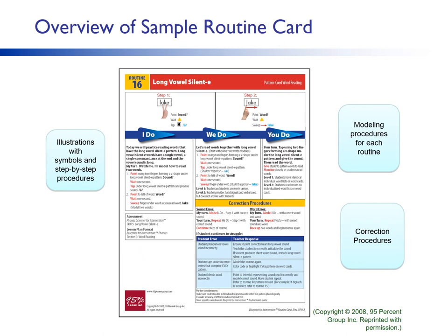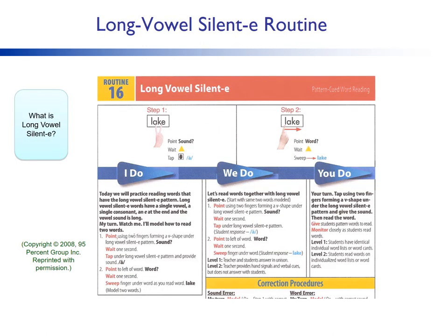In this sample from the 95% Group, a lesson on Long Vowel Silent E is provided. The teacher's materials contain illustrations with symbols and step-by-step directions, explicit wording for modeling procedures during the 'I do, we do, you do' phases, and a correction procedure for any errors that may occur during the lesson. Please take a minute to review these 'I do, we do, you do' modeling sections, noticing the explicitness of the routines. When you are teaching, do your routines include an 'I do, we do, and you do'?